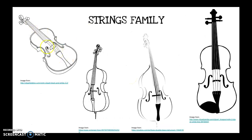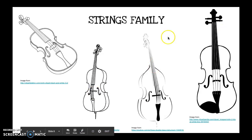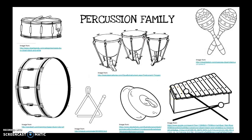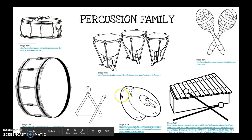Then the strings family: the violin, the viola, the cello, and the double bass. And the percussion family — we talked about these in my family tree: the snare drum, the bass drum, timpani drum, triangle, cymbals, xylophone, and maraca.